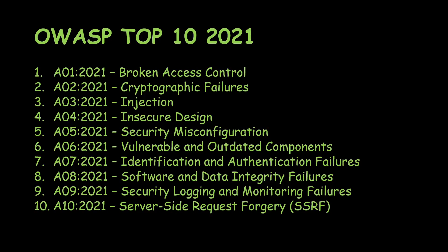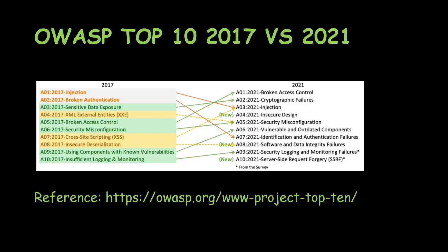Hello everyone, this is Mutated Nuts and today we'll be continuing the OWASP Top 10 2021 video series. Today we'll be looking at the fifth risk: Security Misconfiguration. I have covered the previous four risks in earlier videos, so you can go and check those out. First, let's look at the 2017 versus 2021 comparison table.